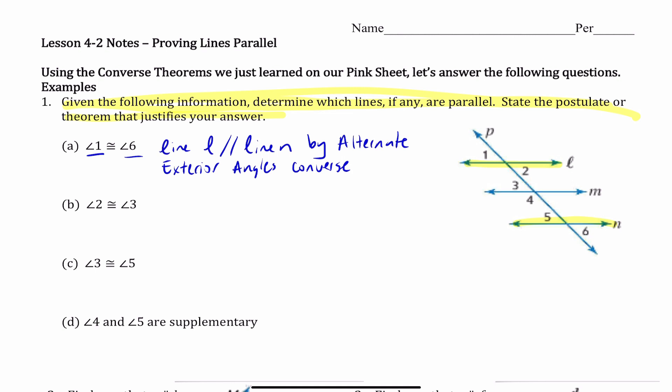So we can say that line L and line N are parallel by the Alternate Exterior Angles Converse. That's 1A.